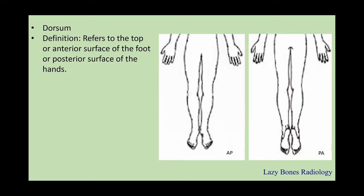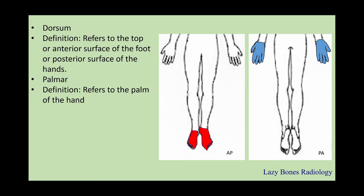Dorsum refers to the top or anterior surface of the foot, or the posterior surface of the hand. The top part of your foot is known as the dorsal surface, and the posterior part of the hand is known as the dorsal part of the hand. Palmar refers to the palm of the hand — the anterior surface of the hand is known as the palmar region.